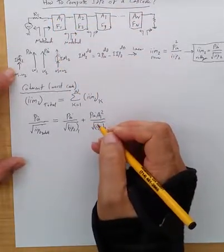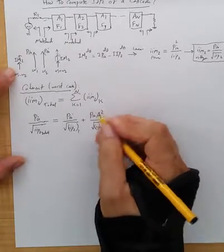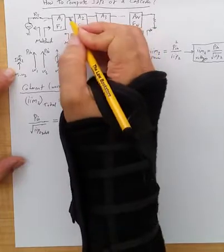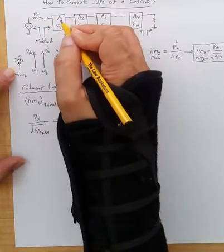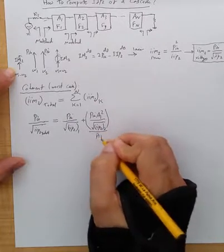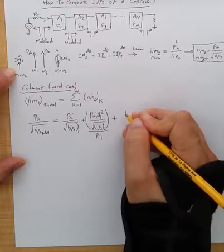We want to compute it at the input of the first stage. So we need to divide it, and by the way, this is voltage. We are adding everything in voltage. So we need to transfer it back to the input of the first stage, dividing by the voltage gain of it. So it would be divided by A1.